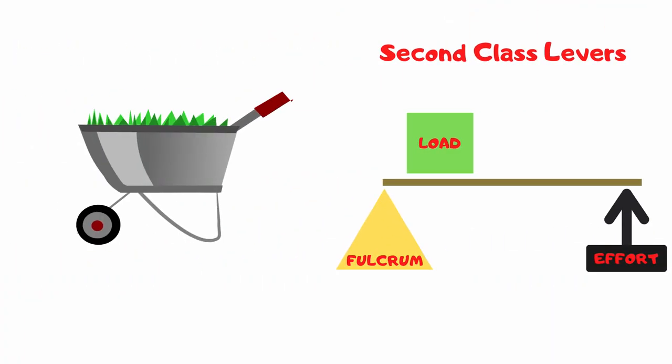Well, what class is a wheelbarrow? A wheelbarrow is a second-class lever. The load is located between the effort and fulcrum. The wheel is the fulcrum, which allows the wheelbarrow to pivot up and down. When you add effort by pulling the handles up, it's easier to lift the load. Some other examples of second-class levers are a bottle opener and a stapler.